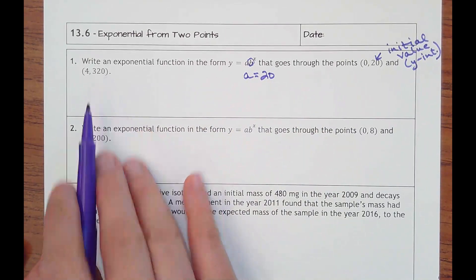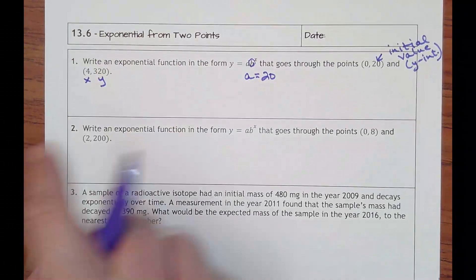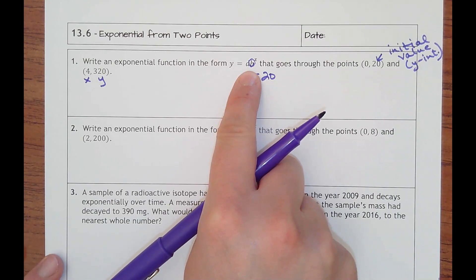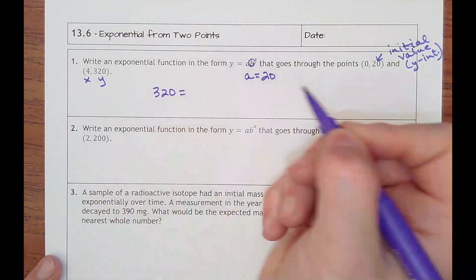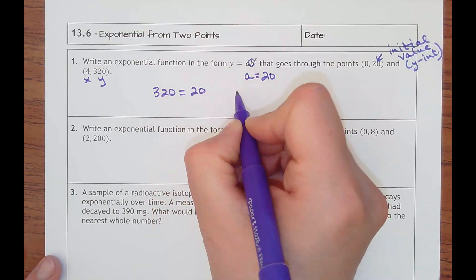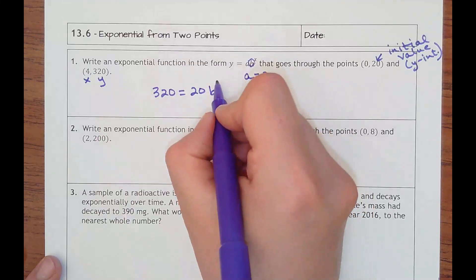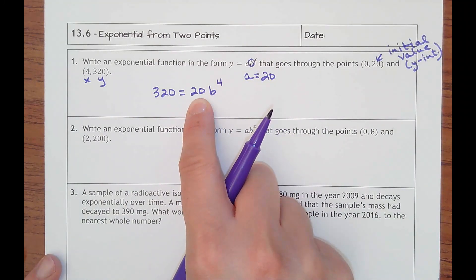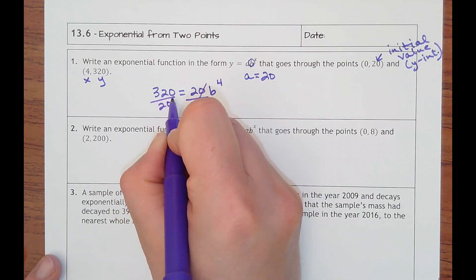What you want to do is use the point where 4 is your x, 320 is your y, and plug everything in. The only spot you won't have a number for is the b. So we'll say 320 equals 20 times b to the x power, which is going to be 4. If I'm going to solve for b, the first thing I need to do is get rid of this times 20, so I would divide that away.